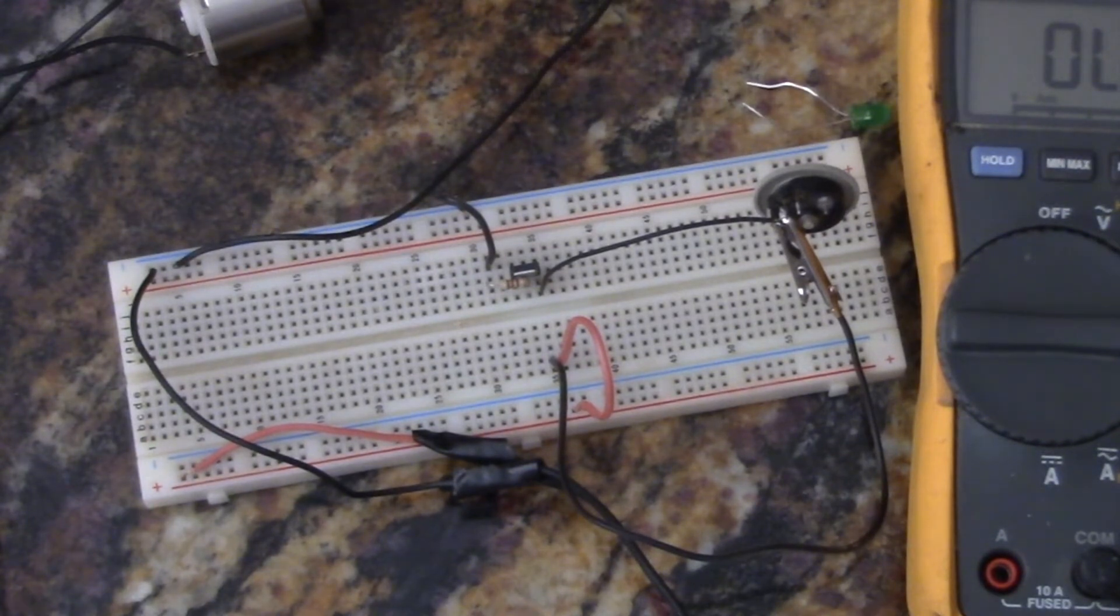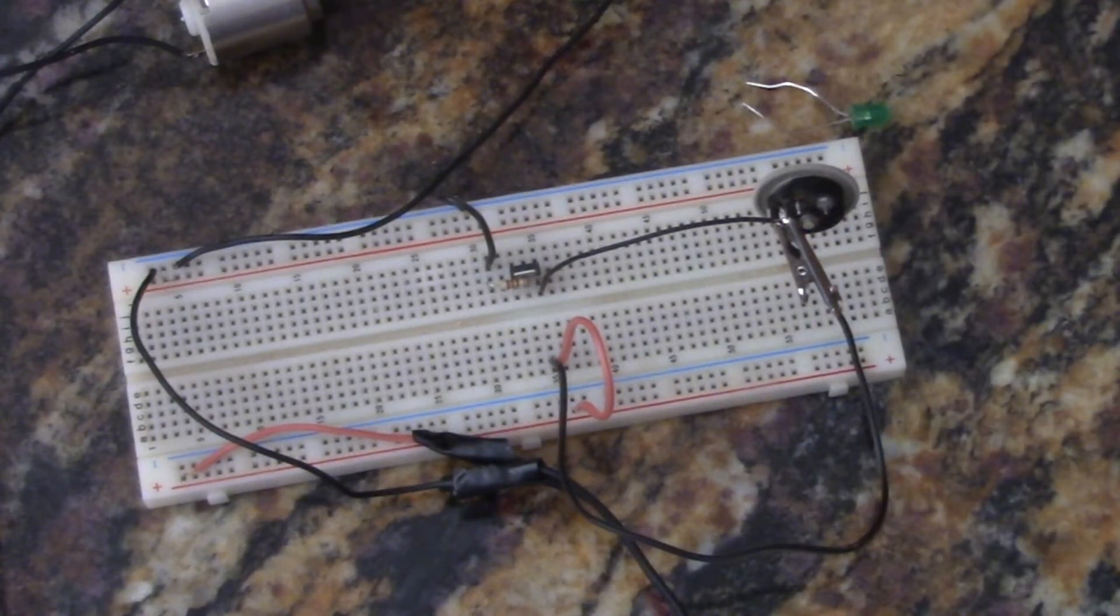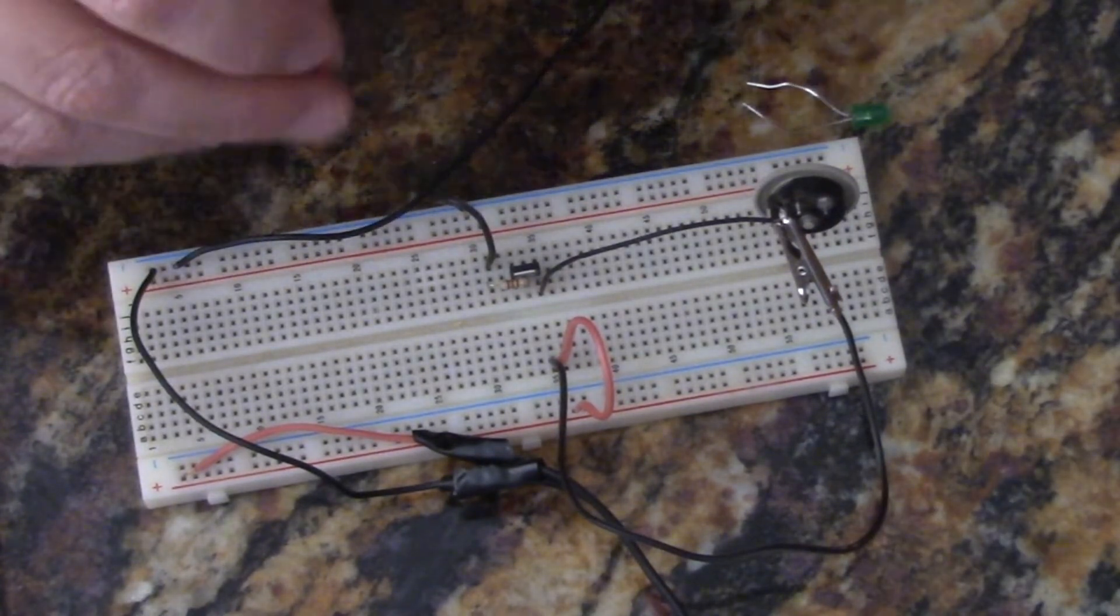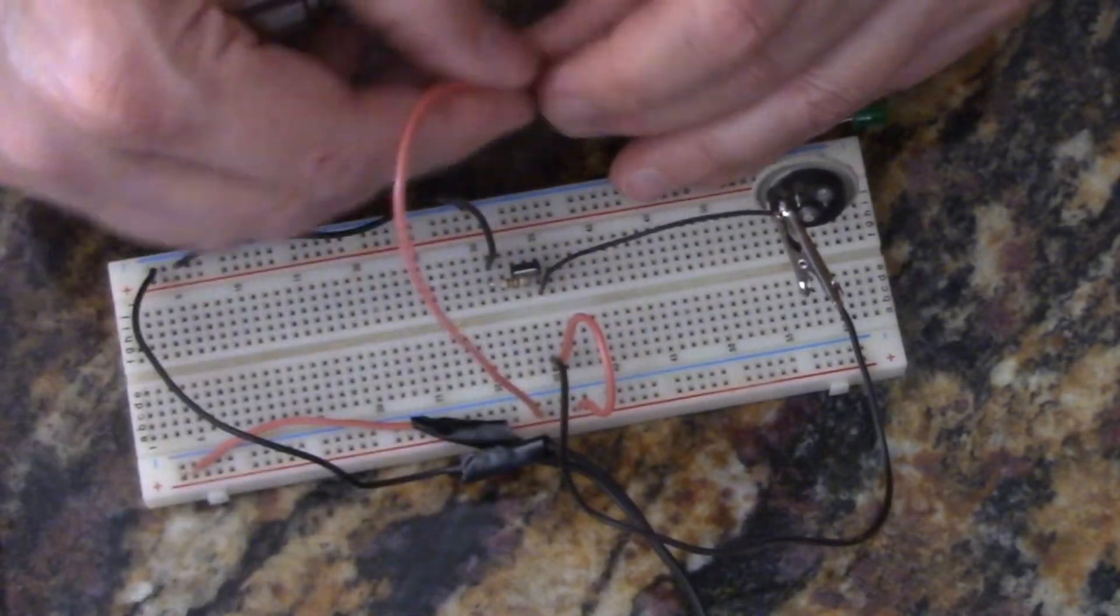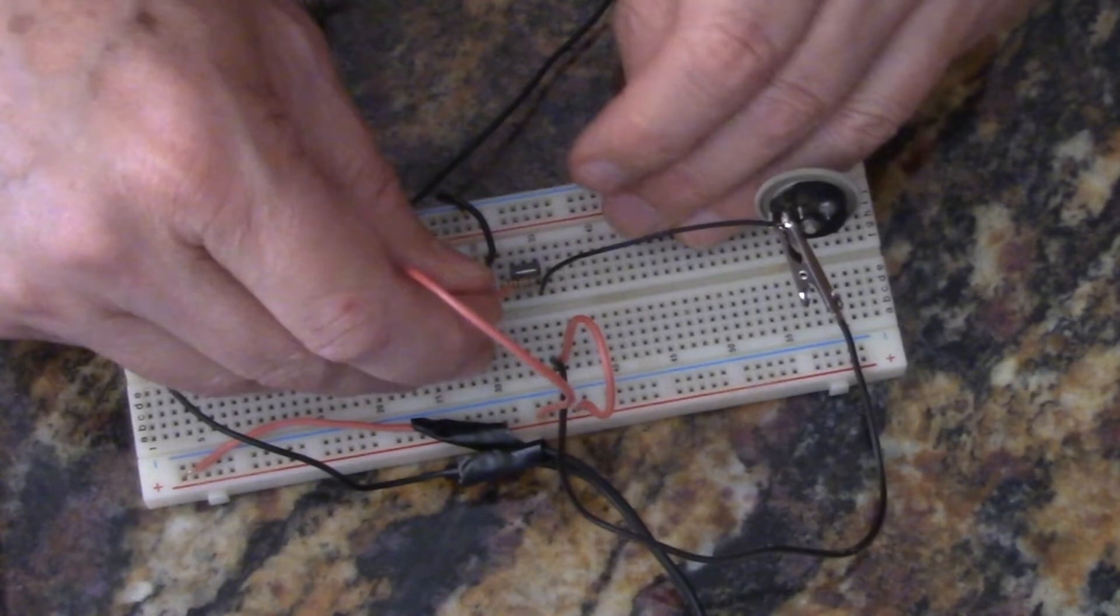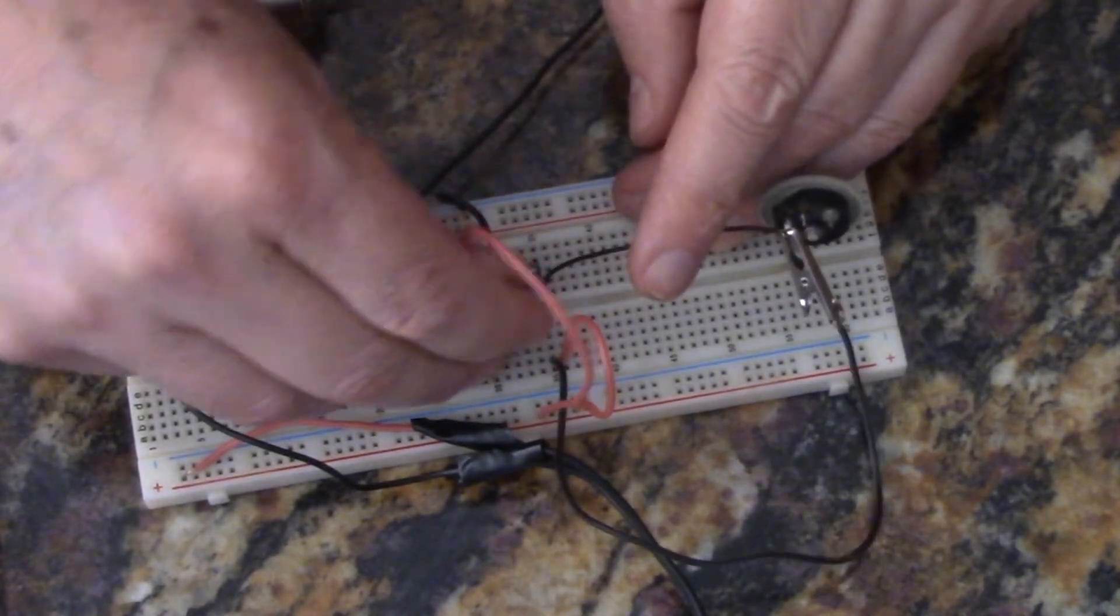Now current flows from the collector to the emitter. So we need a lead going from positive for power, the positive side of the power, to the middle lead, which is going to be that one right there.